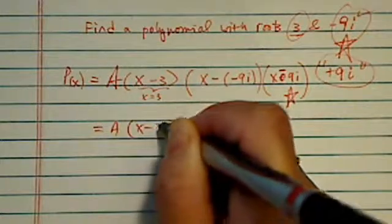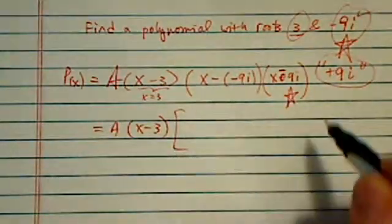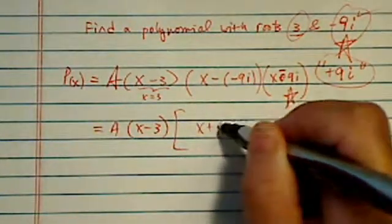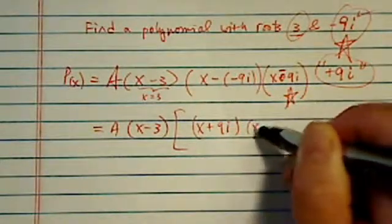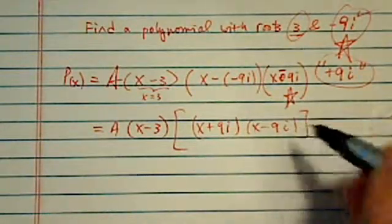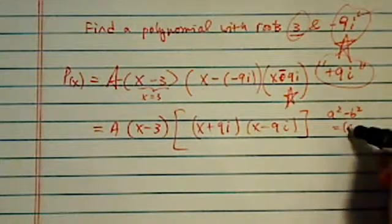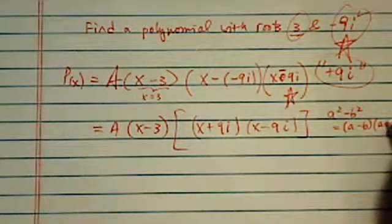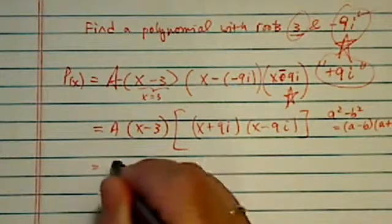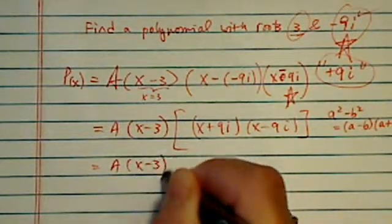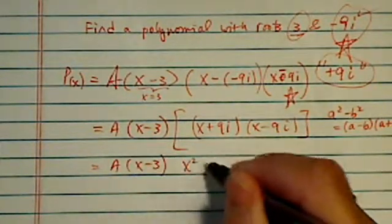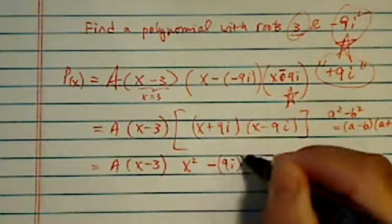Okay, so from here, all we have to do is really just multiply it out. Here I have x plus 9i times x minus 9i. And using the difference equation a squared minus b squared equals a minus b times a plus b, I can shortcut myself in that it's x squared minus 9i squared.